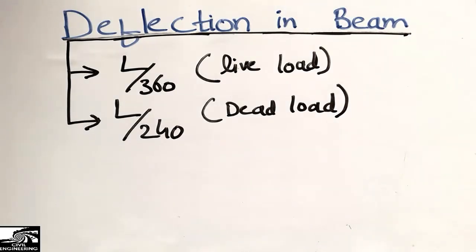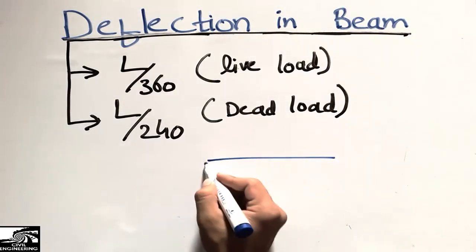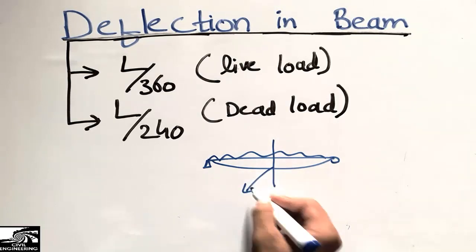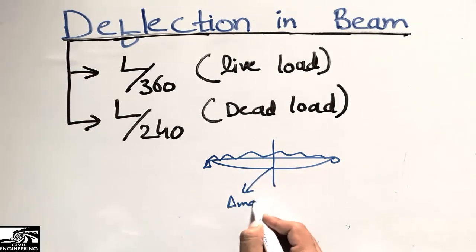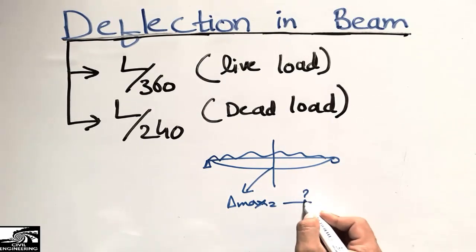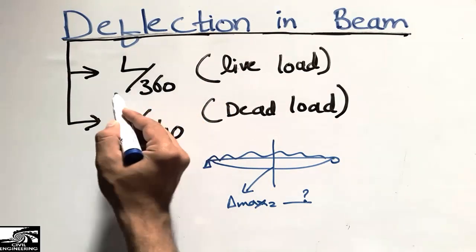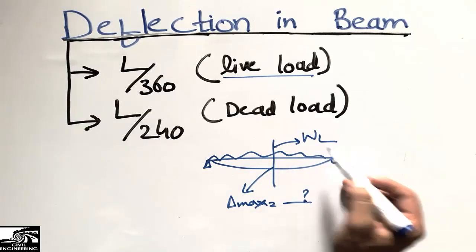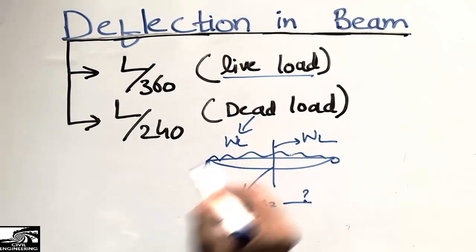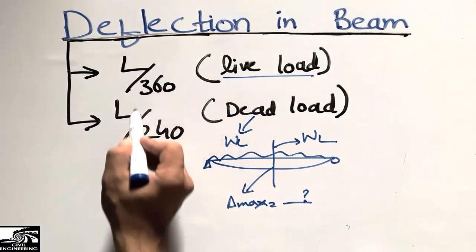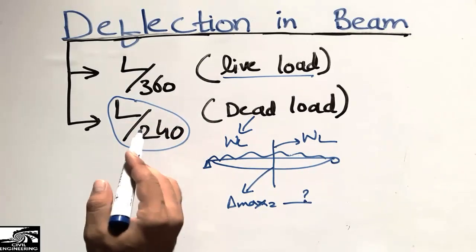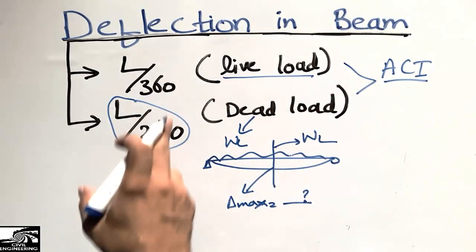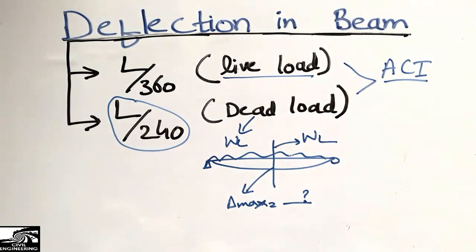When a load acts on a beam, it will deflect and show the maximum deflection at the center of the beam. The maximum deflection due to live load should not be greater than L/360, and the maximum deflection due to dead load should not be greater than L/240. These are the maximum allowable deflection limits according to the ACI.